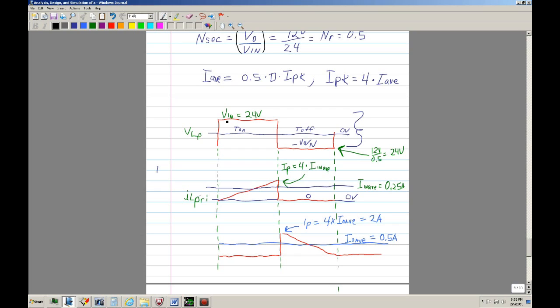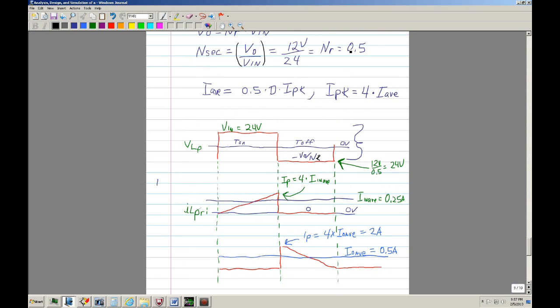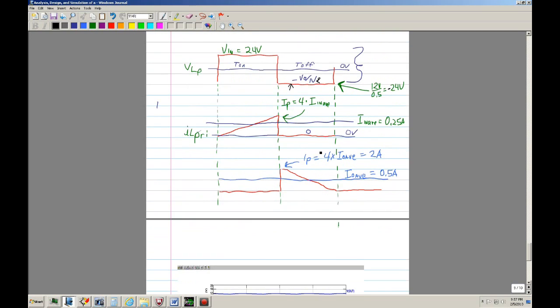So before we simulate, just want to draw a little circuit. This is where we had drawn out. We know that during the time on, this voltage, in other words the voltage across the inductor, is supposed to be 24 volts. And when it turns off, it's supposed to swing to a negative Vout divided by the turns ratio.